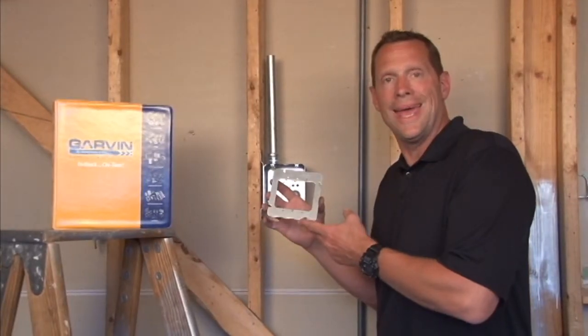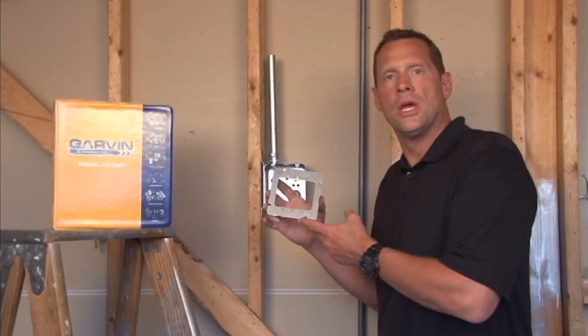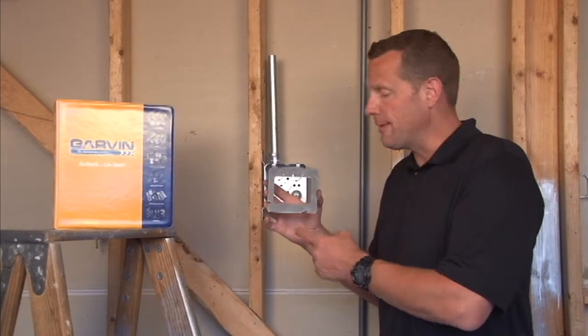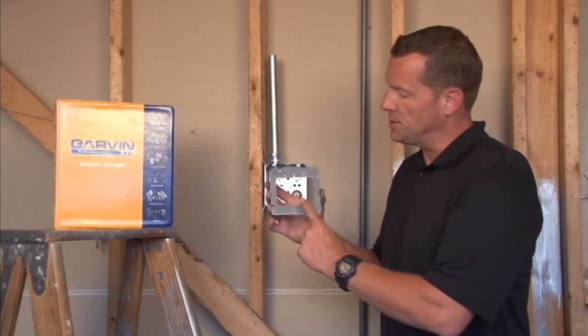Part number 72C20A is a 4 and 11 sixteenth inch device ring for two gang. That means you can install two devices side by side.